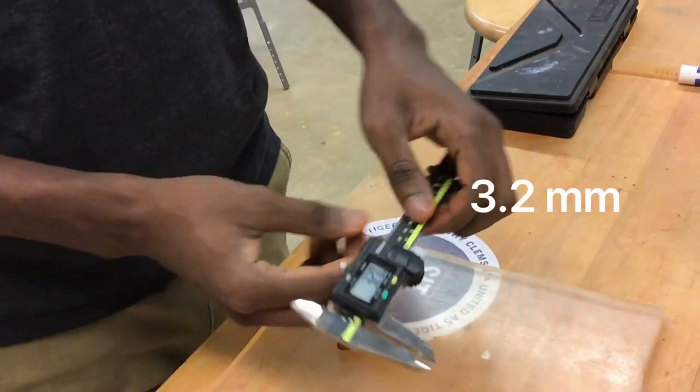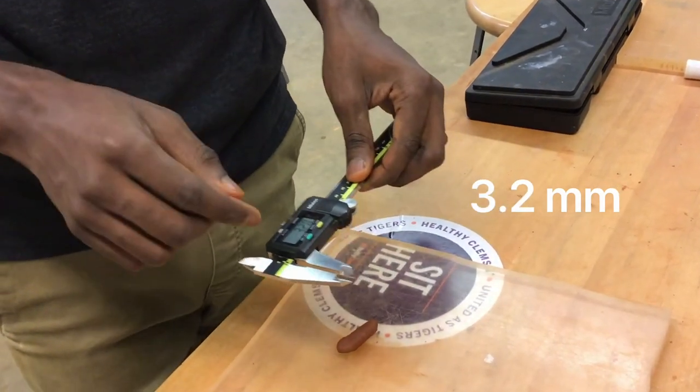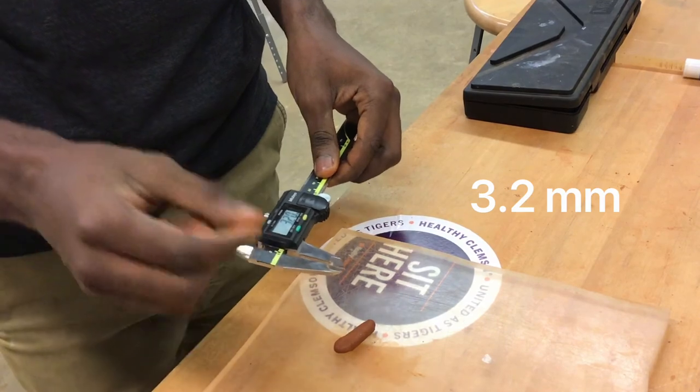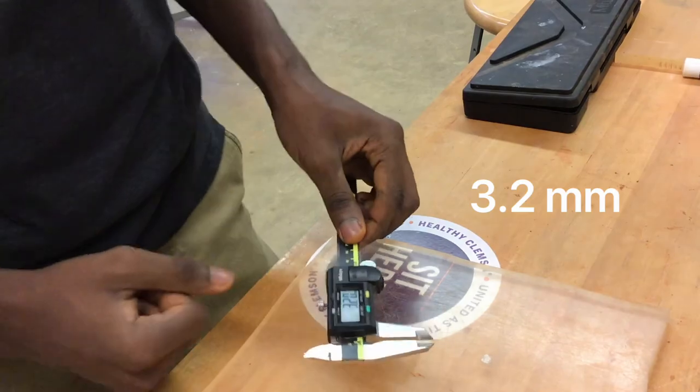I'm showing my vernier caliper and I've set it to 3.2 millimeters because that's going to be our guide to measure the diameter of the sample to see if it crumbles at the right diameter.